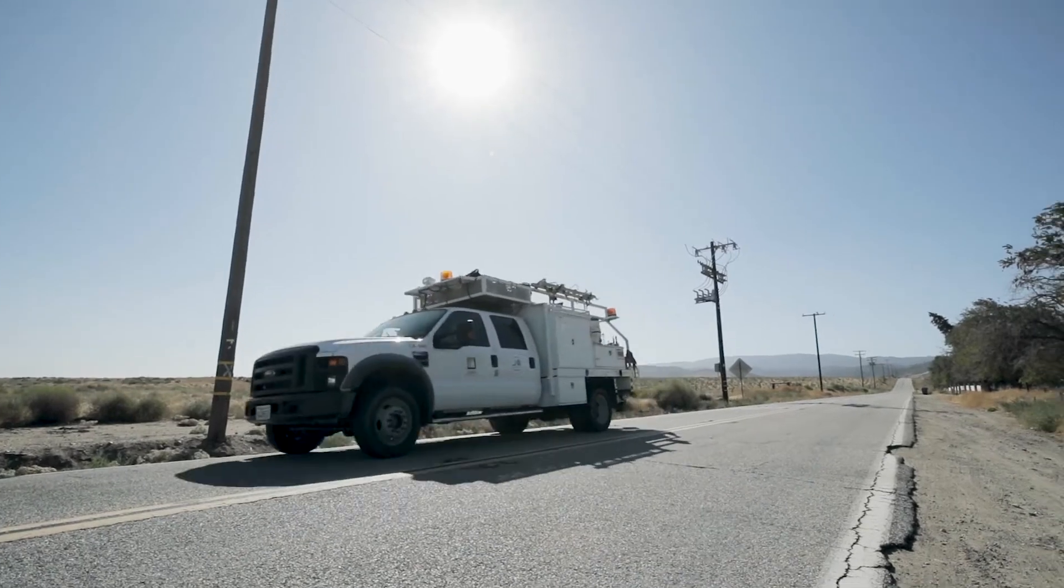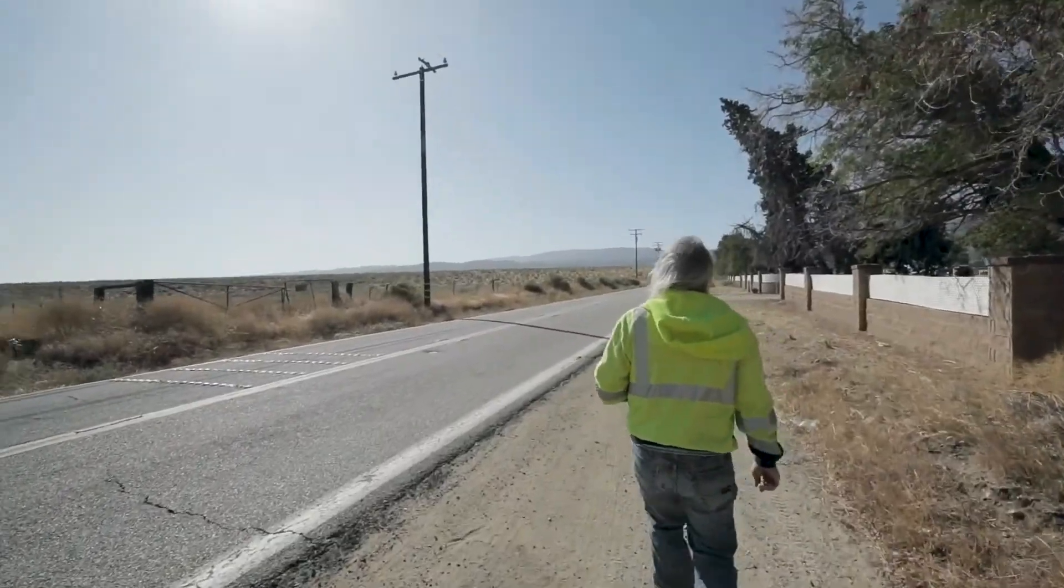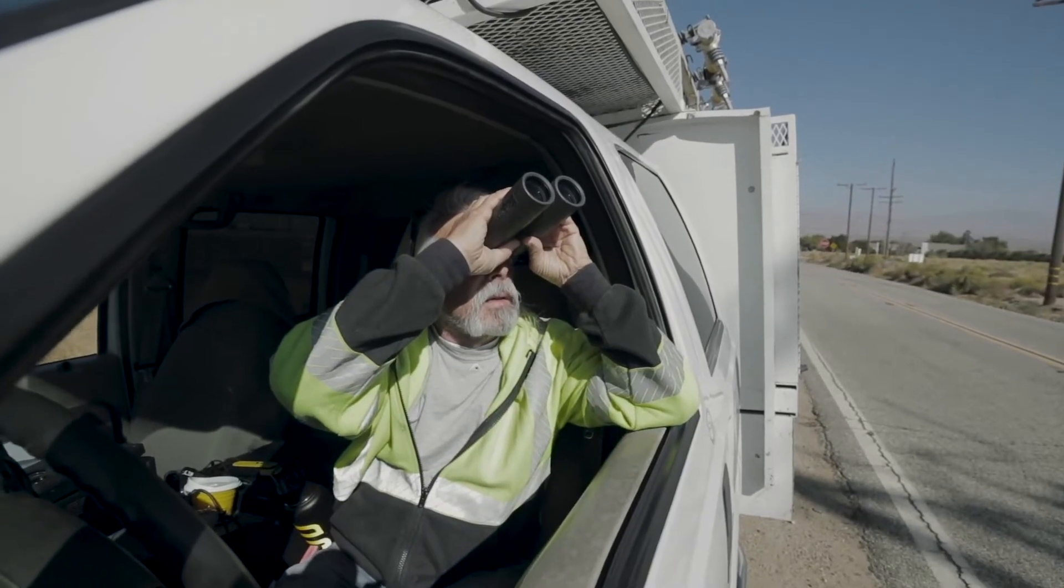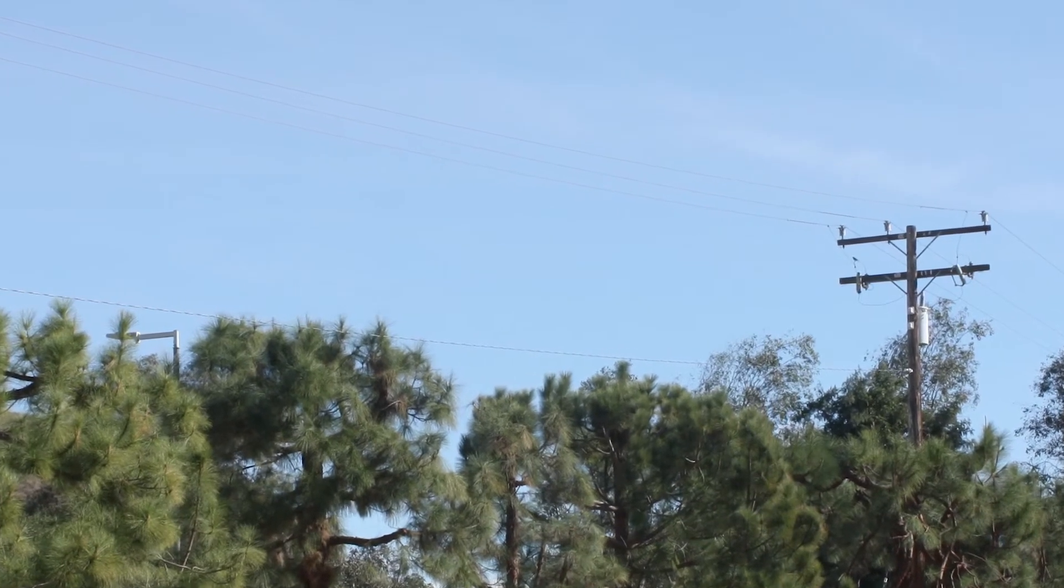When we were performing an EFD patrol, we found that the EFD had identified a potential power line failure outside of an elementary school in Murrieta, California.